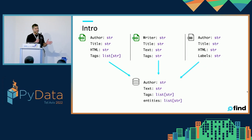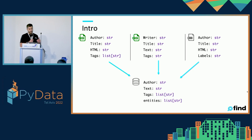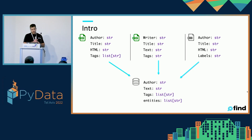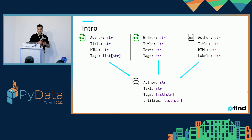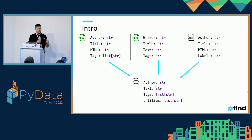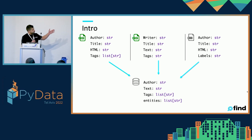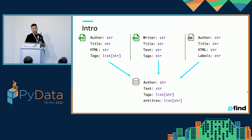Those datasets come in a bit differently — some have certain fields, others don't — and of course we want to transform them into a single format we can use. That's classic ETL. But again, we want to make sure our non-coders are able to run that pipeline by themselves without having to disturb our data science team.